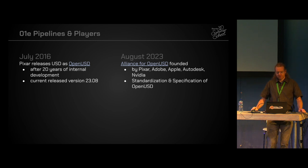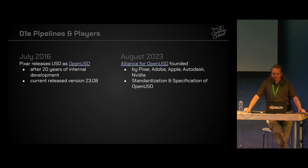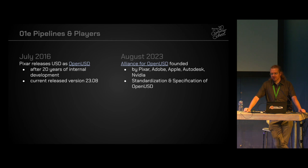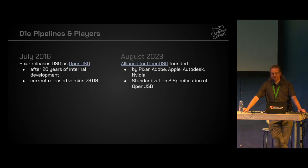In July 2016, after the huge success of Alembic — which had been made public by Industrial Light & Magic and Sony Pictures in 2011 — Pixar released USD as OpenUSD to the public after 20 years of internal development. With that, they also provided Hydra and OpenSubdiv, as well as a reference implementation for Maya and Katana. And just two months ago, the Alliance for OpenUSD was founded by several companies.